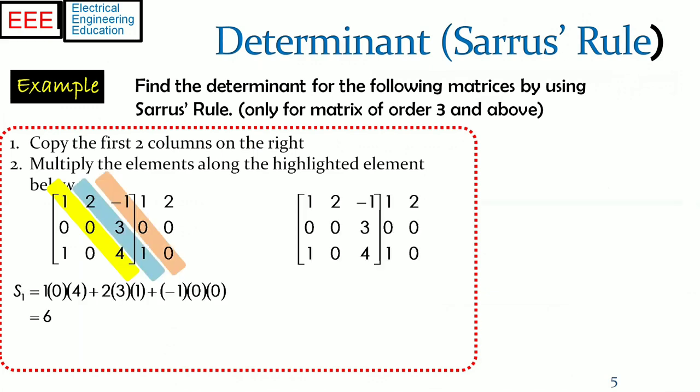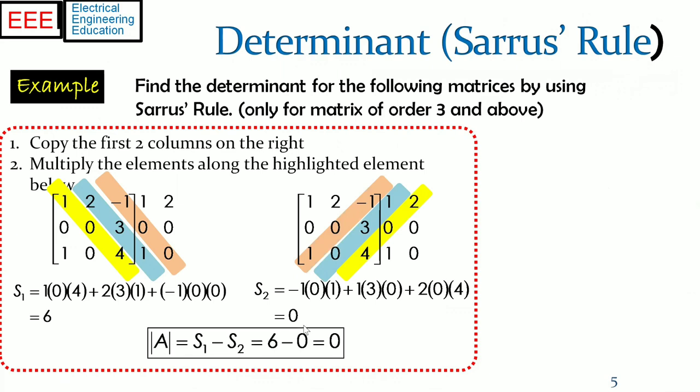In the first step, diagonal and off-diagonal elements are multiplied and added together to calculate S1. In the second step, cross diagonal multiplication and addition are performed to obtain S2. The difference of S1 and S2 is the determinant.